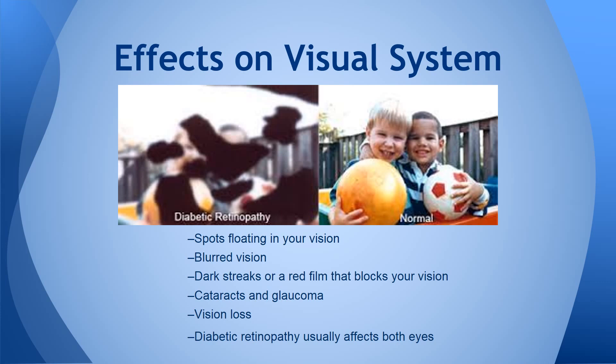The effects on the visual system: here we see a visual representation of what a person with DR may experience. On the right side is a normal picture. On the left, notice the dark spots — sometimes called floaters — and a bit of peripheral loss in the upper right. There is no pattern when it comes to these black spots and floaters; it depends where the blood vessels burst and how far the DR has progressed. Blurred vision, dark streaks, or a red film that blocks vision, cataracts, glaucoma, and vision loss are also common. DR usually affects both eyes, not just one.